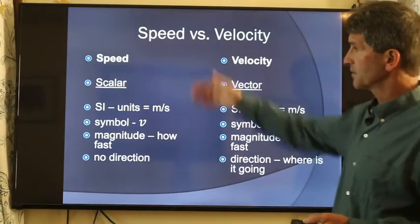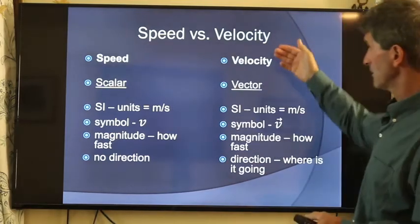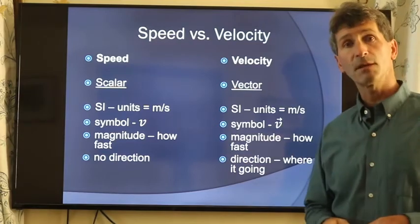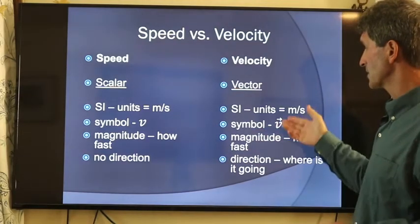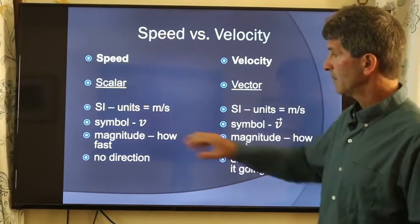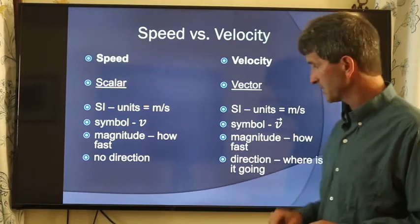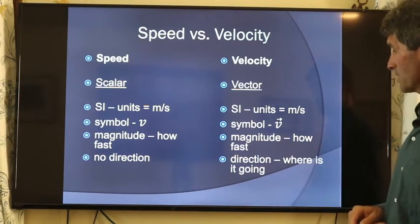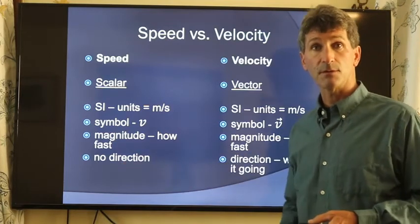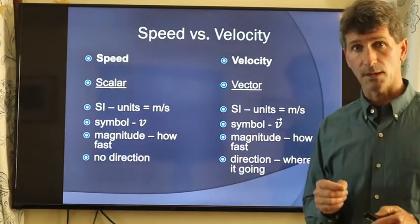Speed, it's a scalar. Units are meters per second. Velocity is a vector, same units. Speed, symbol is normally V. Velocity, symbol is normally V with an arrow on top. Speed talks about how fast. Velocity is also about how fast. But the difference here, no direction for speed. If it's a velocity, it's telling you where it's going.